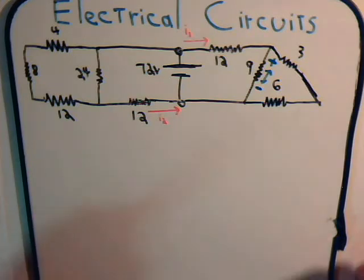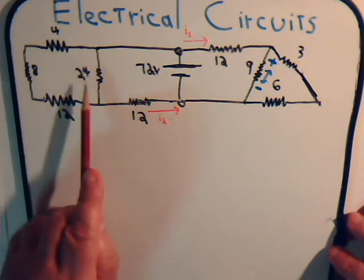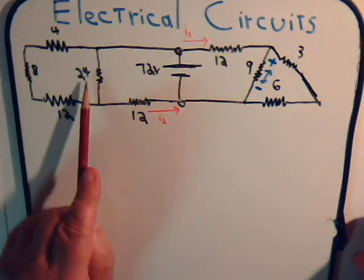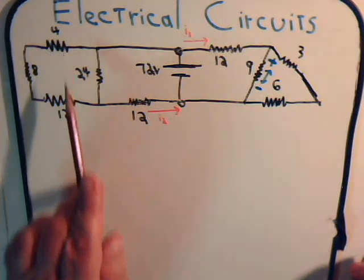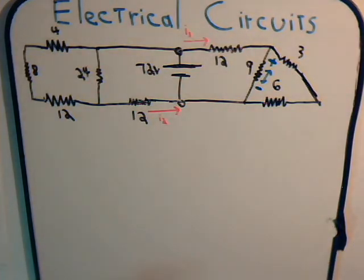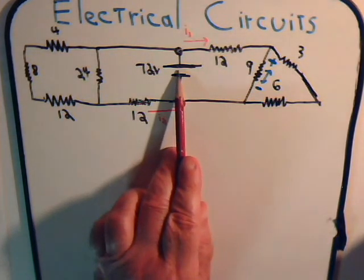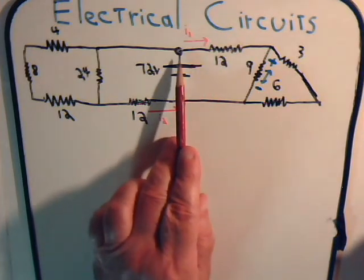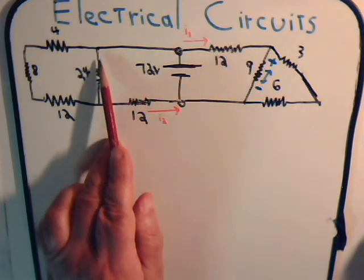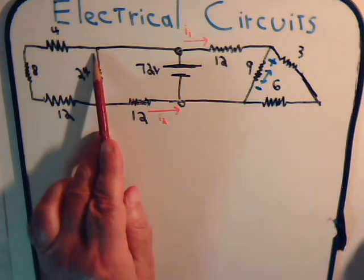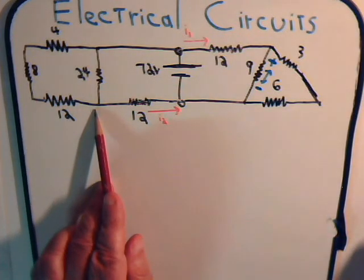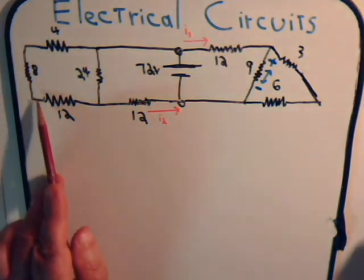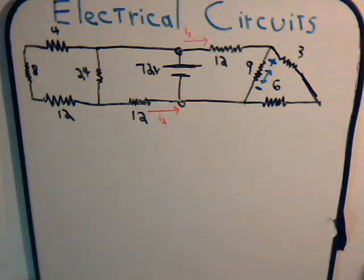Over here at this end of the circuit, the 24 ohm and the 8 ohm resistor are in parallel with each other, and then we have a 4 ohm and a 12 ohm in between them. The current comes from the battery and goes across the 24 ohm resistor, then it has to go through the 4, the 8, and the 12 ohm resistor. So it's clear that these 3 resistors are in series with each other.